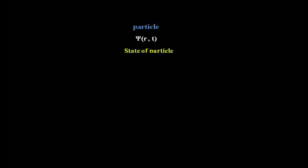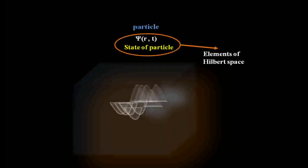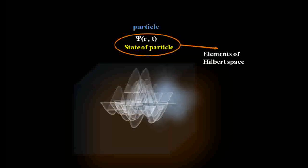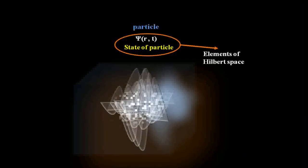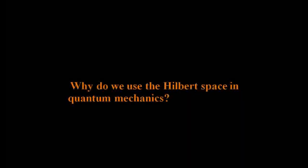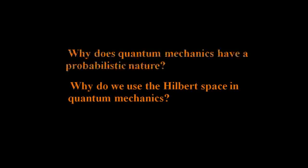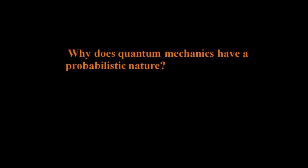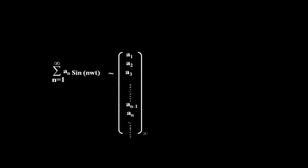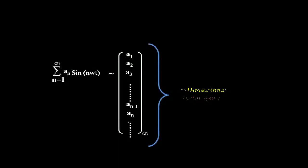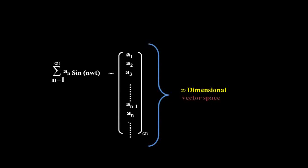In this video we will see how a particle described by the wave function in quantum mechanics is an element in Hilbert space. Why do we use Hilbert space in quantum mechanics? And why does quantum mechanics have a probabilistic nature? How can we write this expression as a column matrix?